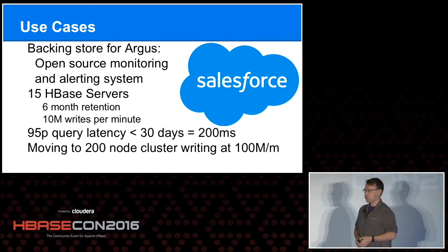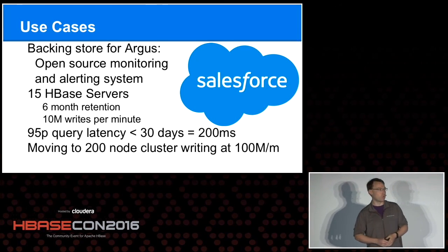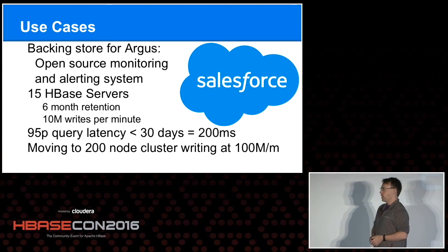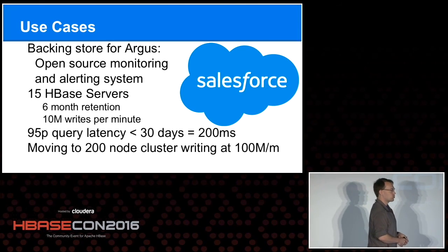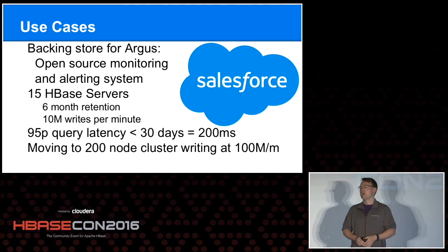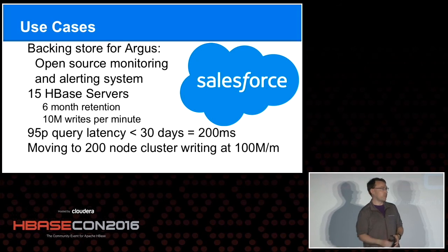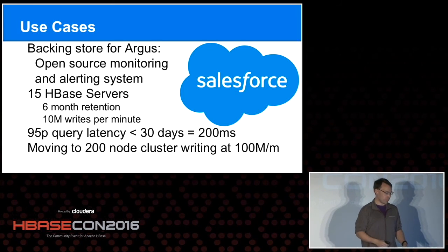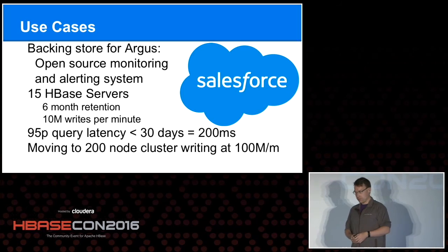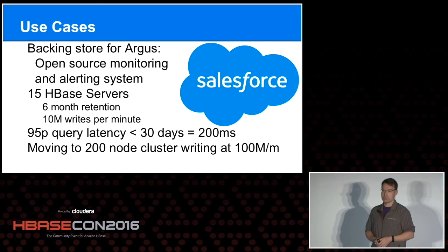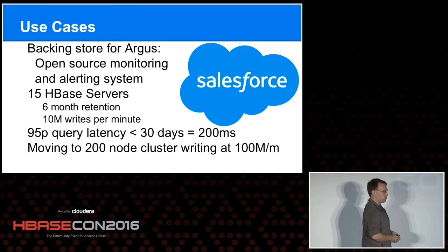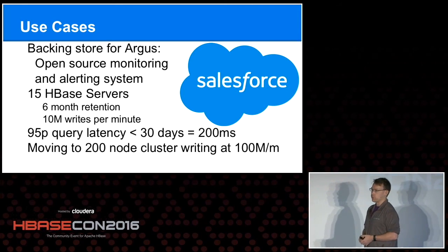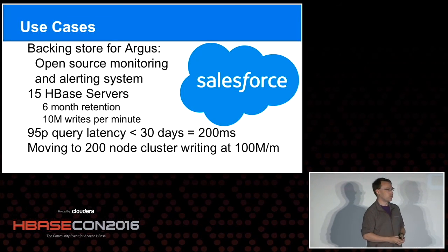Just some use cases. If you went to the talk earlier, the folks at Salesforce - Tom and his team - built Argus for monitoring their infrastructure. They added a lot of missing features that TSDB doesn't support, because it's primarily focused on just the data points, but they added monitoring, alerting, dashboarding, all of that kind of stuff on top of it. They're getting 200 milliseconds at the 95th percentile for queries of data less than 30 days, which is really impressive. They're growing their clusters to write up to 100 million data points a minute, and they may be moving to Phoenix off of TSB. There are plenty of options for Argus as an underlying data store.